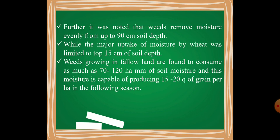Mind it — the weeds growing in your fallow land, where no crop is planted, consume as much as 70–120 hectare-mm of soil moisture. This moisture is capable of producing 15–20 quintals of grain per hectare. So the water lost by weeds could have produced 15–20 quintals of grain per hectare. You can see how competitive weeds are.